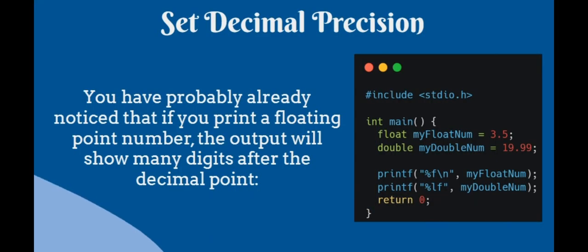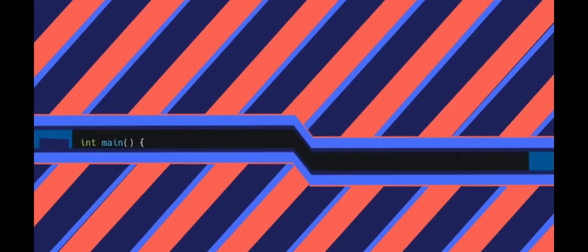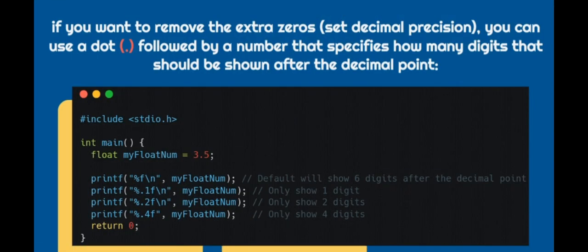Set decimal precision. You have probably already noticed that if you print a floating point number, the output will show many digits after the decimal point. If you want to remove the extra zeros, you can use a dot followed by a number that specifies how many digits should be shown after the decimal point.